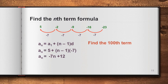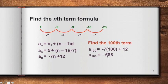Find the 100th term in this sequence. We plug n equals 100 into the formula: negative 7 times 100 plus 12, giving us negative 688. The 100th term is negative 688. I'd also like to emphasize that the common difference is the second term minus the first term — not the first term minus the second term.